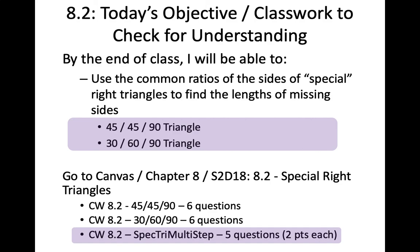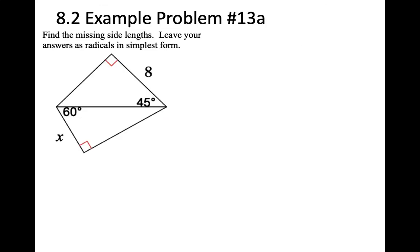Now we've done problems with 45-45-90 and 30-60-90 triangles. Some problems require you to do both — you have a 45-45-90 triangle at the top and a 30-60-90 triangle at the bottom. I need to solve for X, which is on the bottom triangle, but there are no values in that bottom triangle. The common side between the two triangles I'll call Y. I'll solve the top triangle first in part 13A to find Y, then use Y to find X in part 13B.